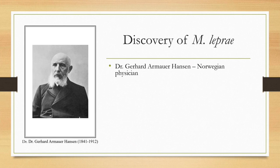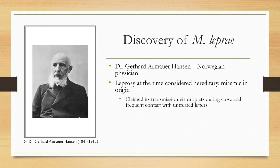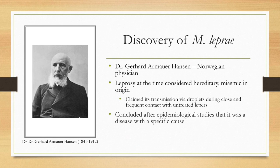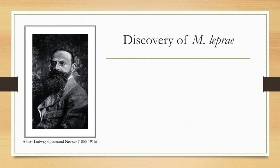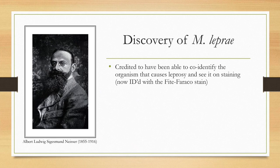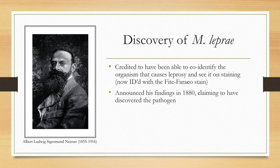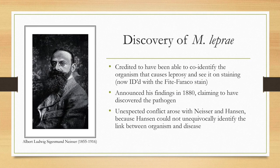The discoverer was Dr. Gerhard Hansen, a Norwegian physician. At the time, leprosy was considered hereditary and miasmic, but he claimed transmission would be through droplets or close frequent contact. He concluded after epidemiologic studies that it was a disease with a specific cause. He discovered the organism but didn't fully identify it as a bacterium. It was Albert Ludwig Sigismund Neisser who was able to identify the bacteria on a stain. It is now identified with the Fite-Faraco stain, which would likely be a board question. Neisser announced his findings in 1880. There was conflict between Neisser and Hansen because Hansen couldn't unequivocally identify the link between the organism and the disease.